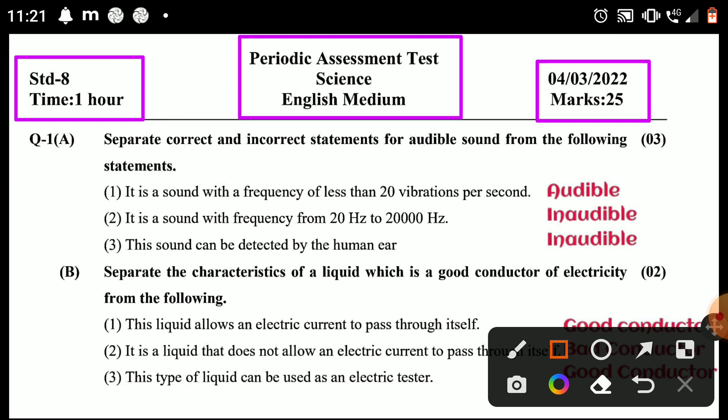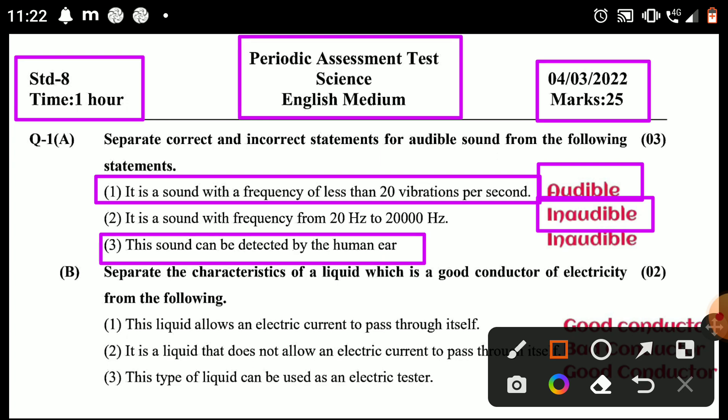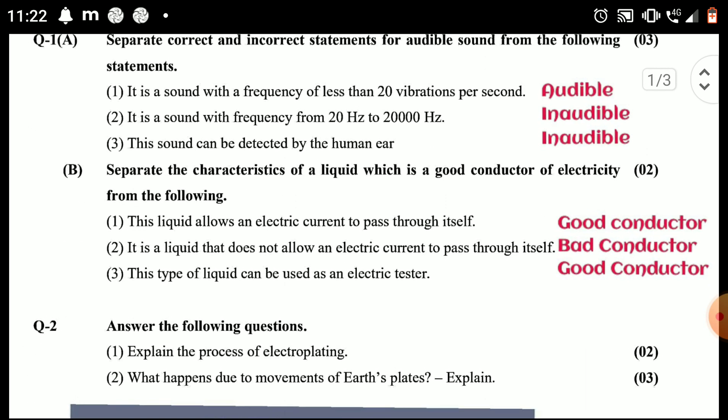Separate correct and incorrect statements for audible sound from the following. It is a sound with a frequency of less than 20 vibrations per second, so it is audible. The rest two are inaudible. It is a sound with frequency from 20 Hz to 20,000 Hz, so it is inaudible sound. This sound can be detected by a human ear, so it is called audible sound.